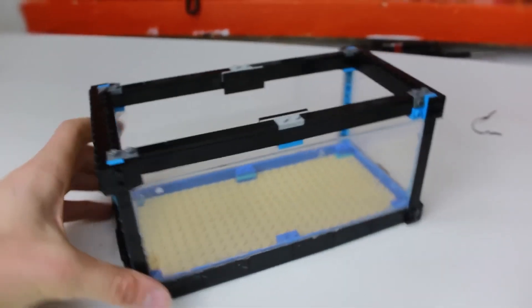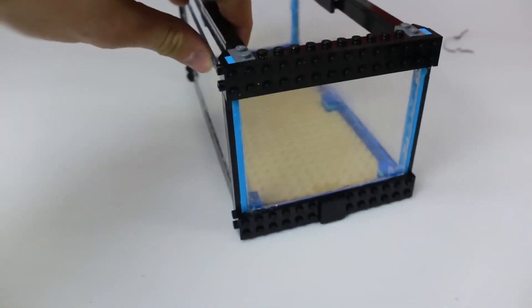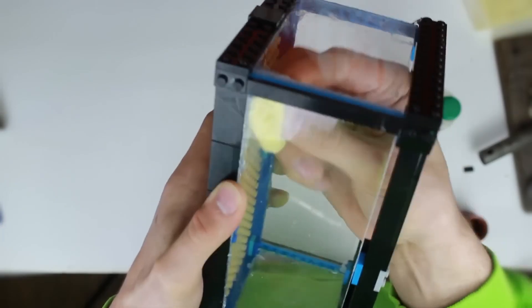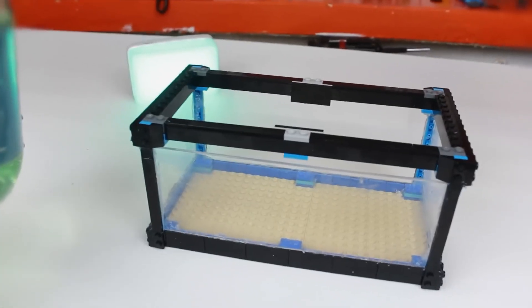After the sealant has dried, every glass must be held on the frame of the aquarium pretty reliably. Excess silicone can be removed using a solvent. Ok, let's check everything for tightness.